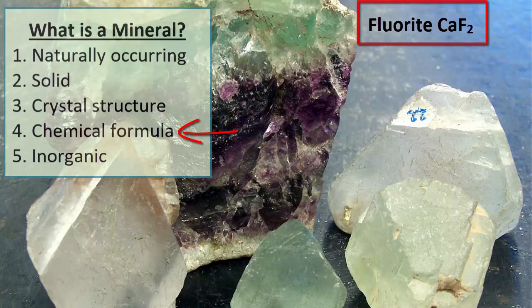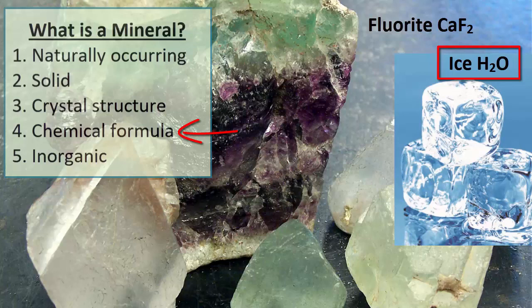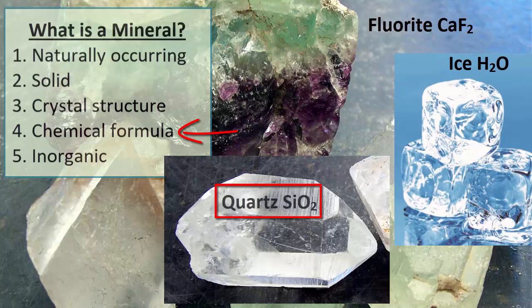The fourth of these, a chemical formula, means that all instances of a particular mineral will have the same relative ratios of each atom in its crystal structure. Ice, for example, will always be two hydrogens for every one oxygen, H2O. Quartz will always be one silicon for every two oxygens, SiO2.